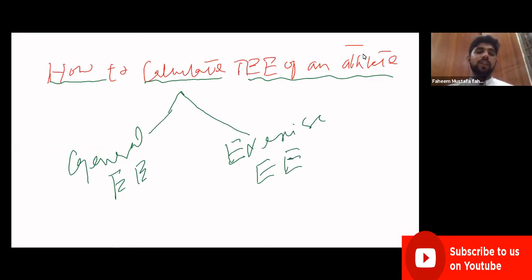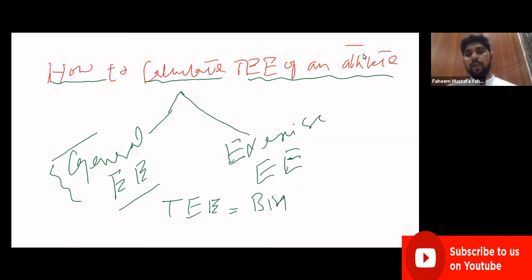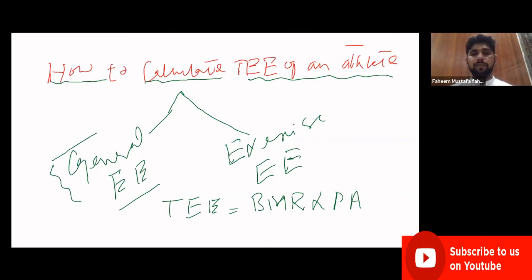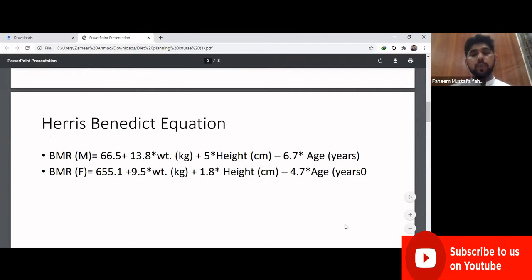For general energy expenditure, we use the same method as for non-exercising subjects. The formula is: total energy expenditure equals BMR (basal metabolic rate) multiplied by the physical activity factor.